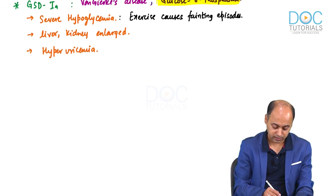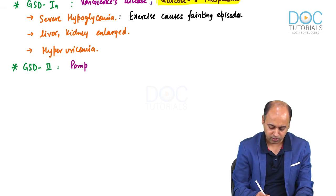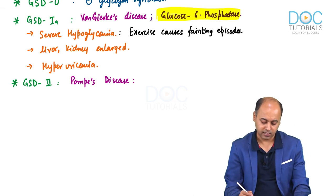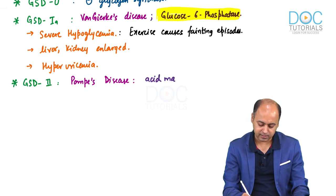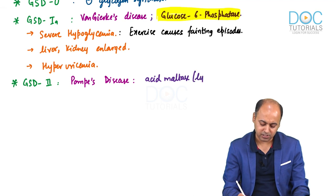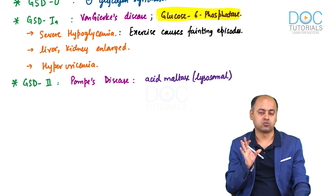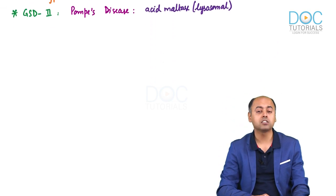Moving on to the second type — GSD type 2, known as Pompe's disease. In Pompe's disease, the enzyme which is deficient is acid maltase, and this enzyme is present inside the lysosome. Some amount of glycogen synthesis and breakdown occurs in all tissues. Storage occurs only in the liver, muscle, and brain, but some glycogen synthesis and breakdown occurs everywhere.